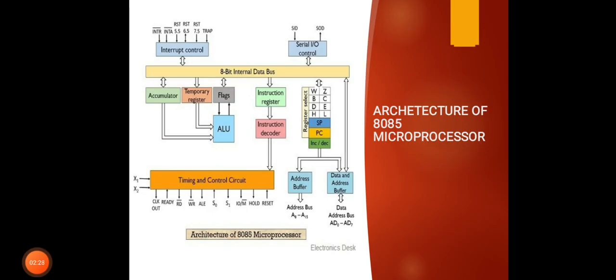This is the architectural diagram of the 8085 microprocessor. The microprocessor is used to execute a program, which is a set of instructions. This block diagram consists of an 8-bit internal data bus, interrupt control, serial I/O control, accumulator, temporary register, flags, arithmetic logic unit, timing and control circuit, instruction register, instruction decoder, register select, address buffer, and data and address buffer.